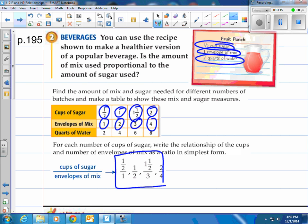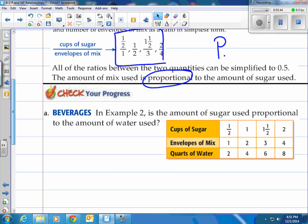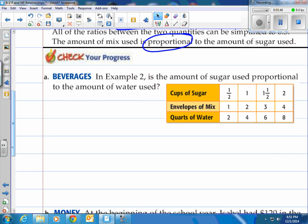Are those all equal, or are they different? Well, if you look at each one of these, they each equal 0.5. It says all the ratios between the two quantities can be simplified to 0.5. If you had a calculator, you can do that. You'll see each one of those equals a half. So the amount of mixed use is proportional to the amount of sugar used. That's how we would spell it, or save us some time, maybe put down P. You'll give it a shot on this A here. Come on back, see how you do.